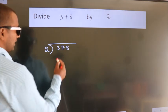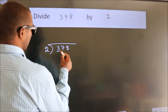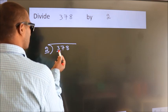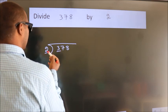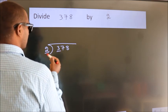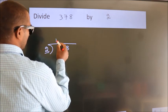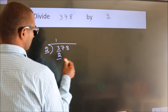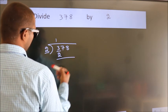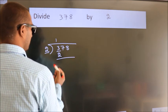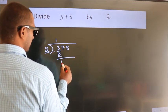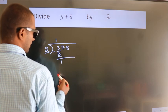Here we have 3, and here 2. A number close to 3 in the 2 times table is 2 ones, which is 2. Now we subtract and we get 1.